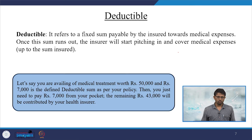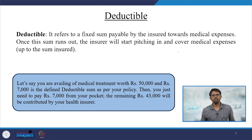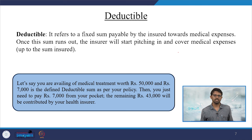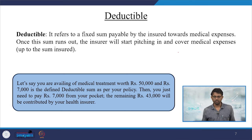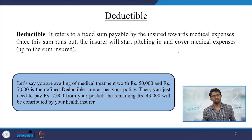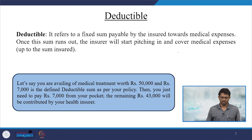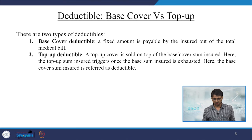Deductible refers to a fixed sum payable by the insured towards medical expenses. Once that sum runs out, the insurer will start covering medical expenses up to the sum insured. For example, if you are availing medical treatment worth 50,000 rupees and 7,000 rupees is the defined deductible as per your policy, you need to pay 7,000 from your pocket and the remaining 43,000 is contributed by your health insurer.